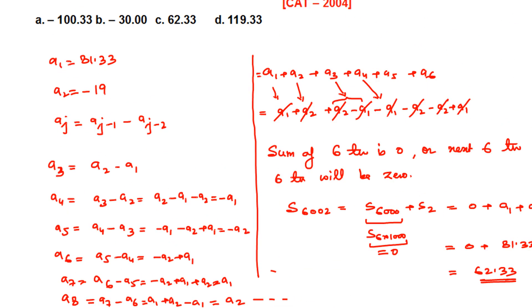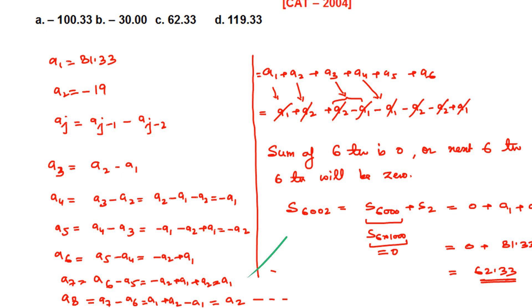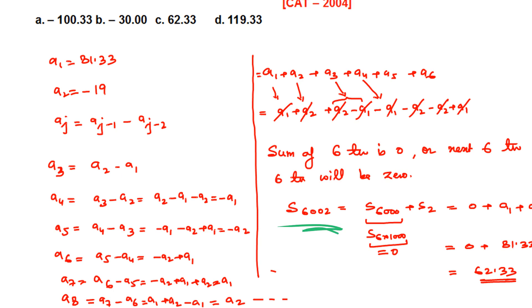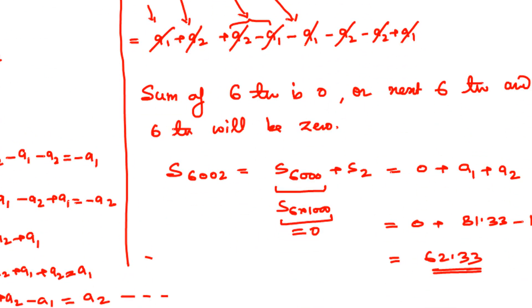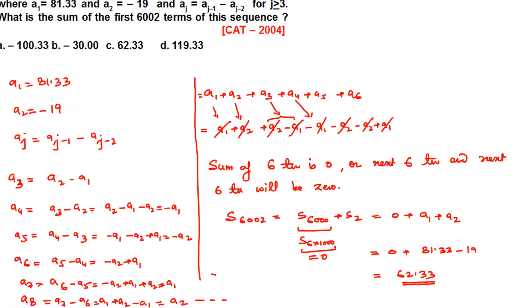Since the sequence repeats every 6 terms, the sum of any 6 consecutive terms is zero. The sum of the first 6000 terms = 0. For 6002 terms: sum = sum of 6000 terms + a1 + a2 = 0 + 81.33 + (-19) = 62.33. The answer is option C: 62.33. For this type of question, finding the repeating pattern is essential; otherwise it becomes unsolvable.